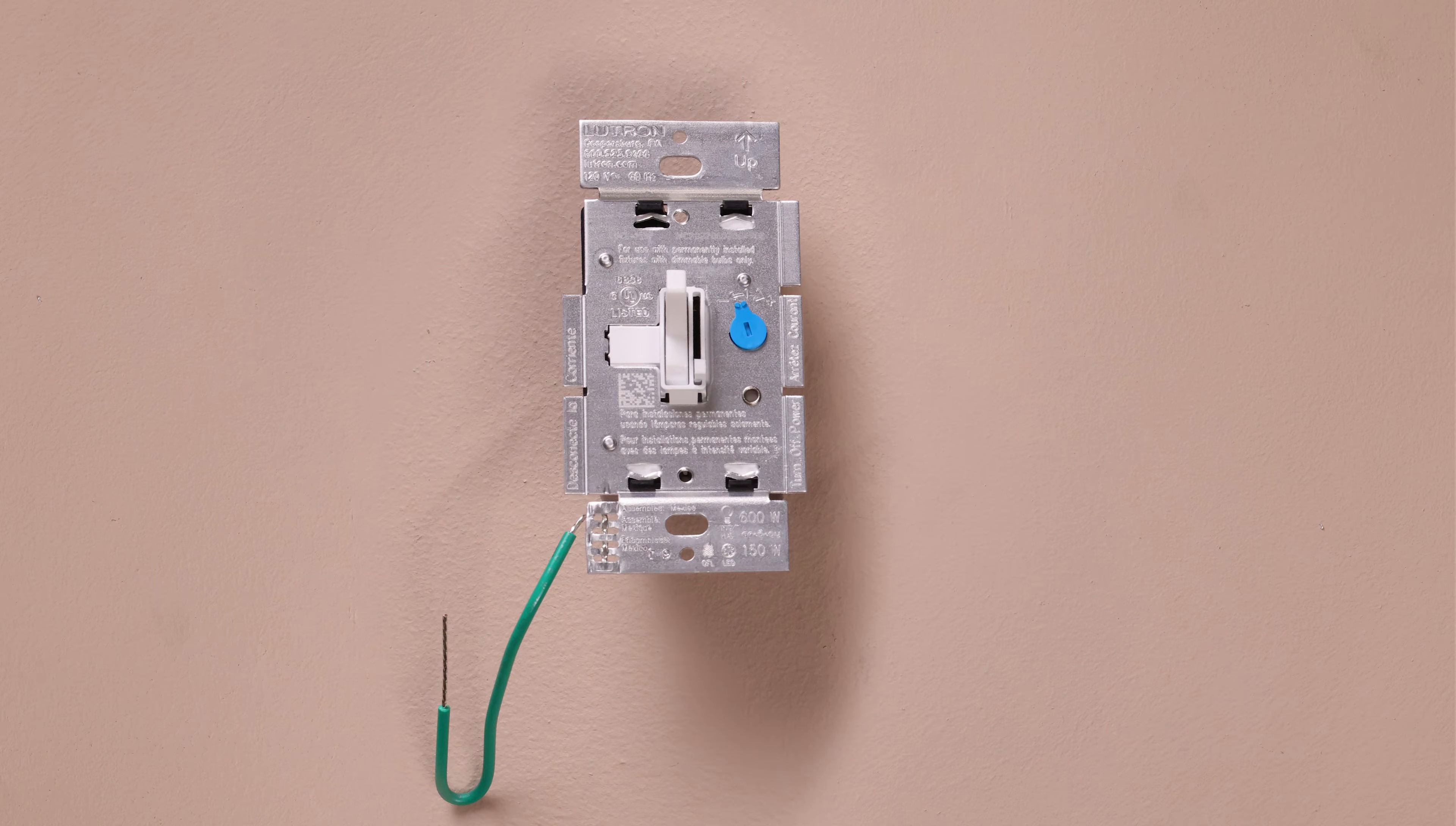If you're installing this dimmer with other devices, break off the fins on the sides where there is an adjacent dimmer. We're going to start with installing the dimmer in a single-pole application, then install the dimmer with a three-way wiring solution. Lastly, we will show you how to adjust the dimming range.